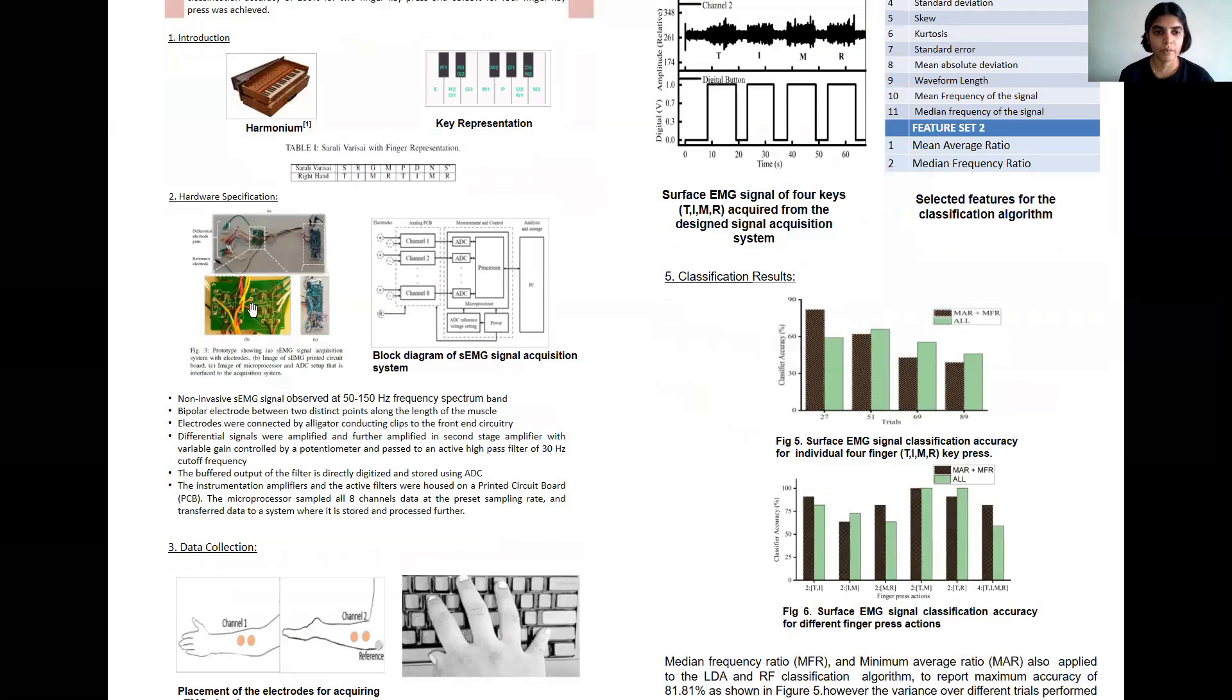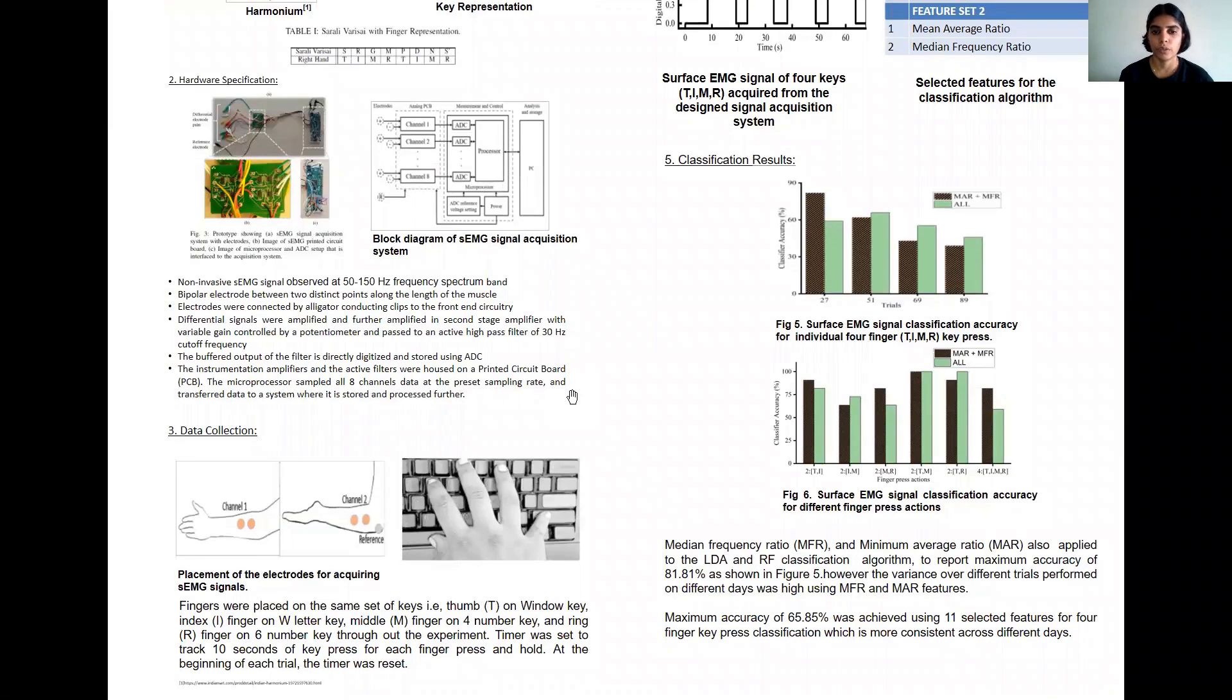With respect to hardware, differential electrodes have been used. The differential electrode is connected to a PCB which is connected to an analog to digital converter which in turn is connected to a personal computer. The data collected is first amplified, then filtered, then converted digitally and stored in the PCB. This stored data can then be used to extract features and then classify.